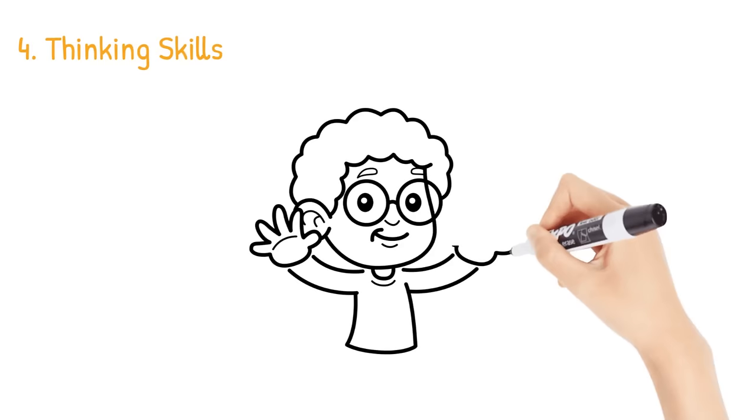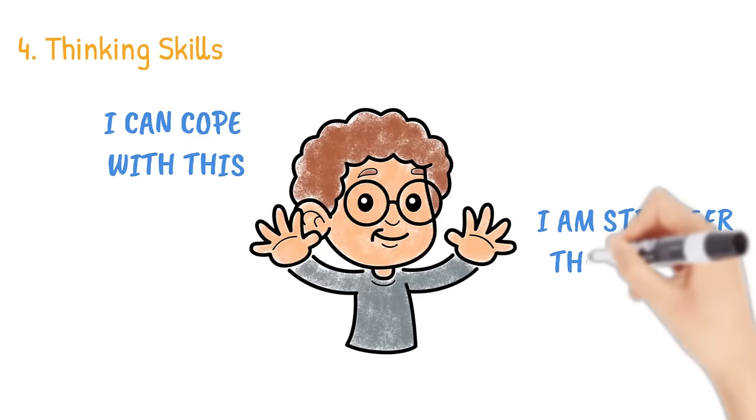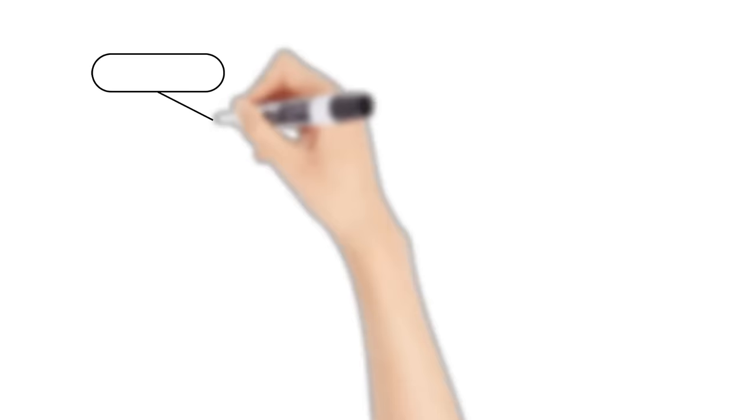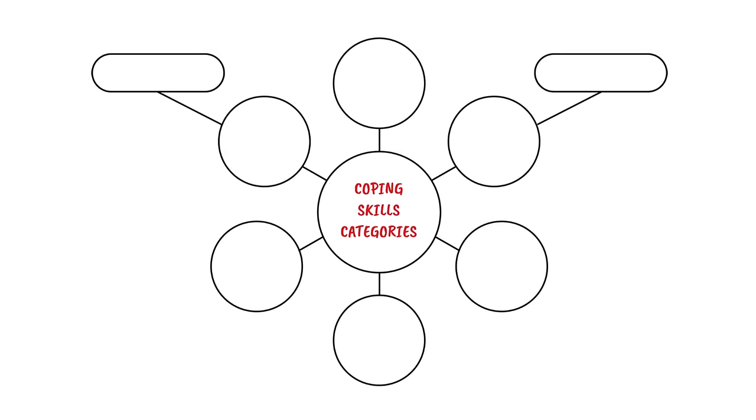To counter your anxious thoughts, you can use thinking skills, such as coaching yourself through the anxious situation, telling yourself encouraging statements, visualizing a peaceful place, focusing on things you are grateful for, or challenging and talking back to your anxious thoughts. For those of you who would like to go deeper into coping skills, we can break down anxiety coping skills into four additional categories.